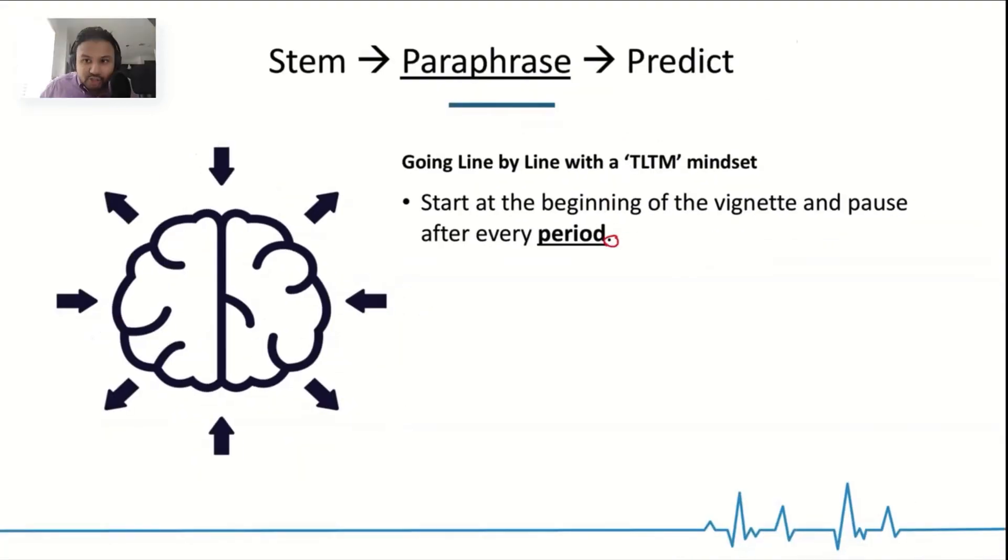And you ask yourself, why is this sentence within the vignette? We're going to build on this. But a good paraphrase starts with the word, the test maker is putting this because...